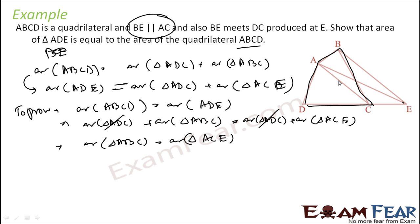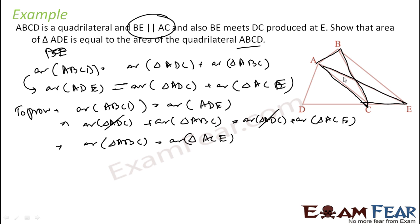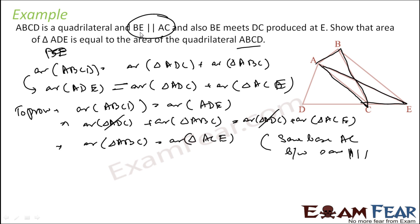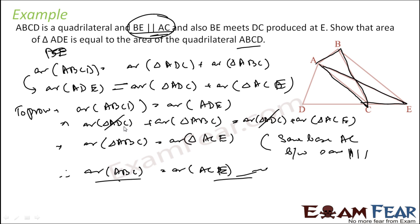Can we prove that triangles ABC and ACE are equal in area? Yes, because BE is parallel to AC, and both these triangles have the same base AC and are between the same parallels. Therefore, area of triangle ABC is equal to area of triangle ACE. Add the common triangle to both sides and the proof is complete.